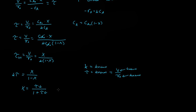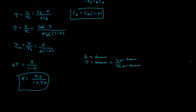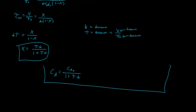Now let's find the concentration for a first-order reaction. If we combine the conversion equation with the concentration equation, we get: concentration of A equals CA₀ all divided by (1 plus tau·K). This result is only valid for first-order reactions.